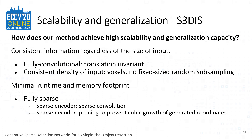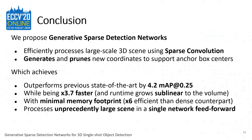There are two important aspects of our proposed method that achieve high scalability and generalization capability. First, our method maintains consistent information regardless of the size of the input — it is fully convolutional, which is translation invariant, and maintains consistent density of input without any random subsampling. Second, our method maintains minimal runtime and memory footprint by being fully sparse throughout the encoder and decoder, which prevents the cubic growth of generated coordinates. In conclusion, we propose Generative Sparse Detection Networks, which efficiently process large-scale 3D scenes using a sparse convolutional encoder and generate and prune new coordinates in the decoder to support unreachable instance centers, outperforming the previous state-of-the-art by 4.2 MAP while being 3.7 times faster, maintaining minimum memory footprint, and processing unprecedentedly large scenes in a single neural network forward pass.